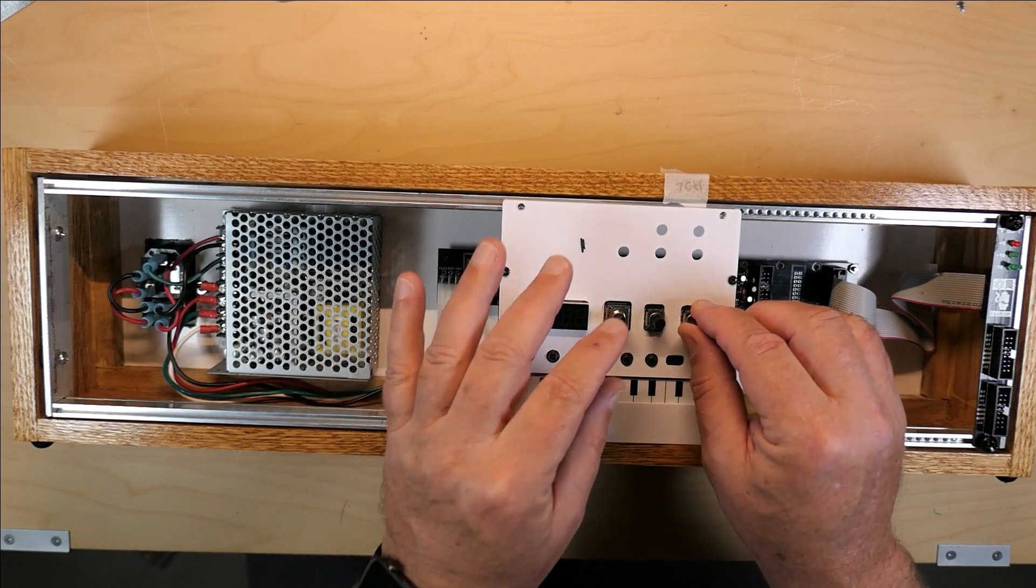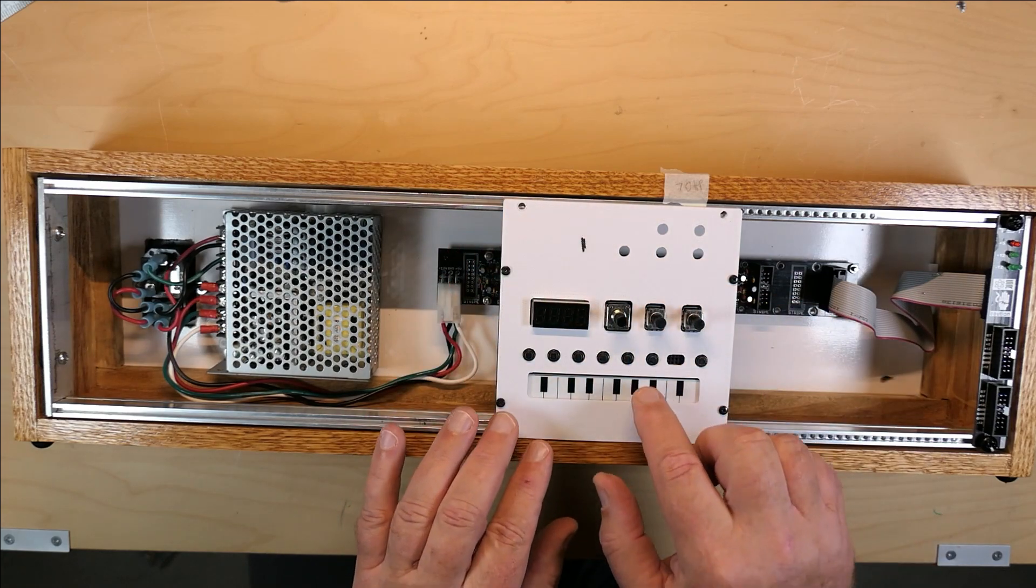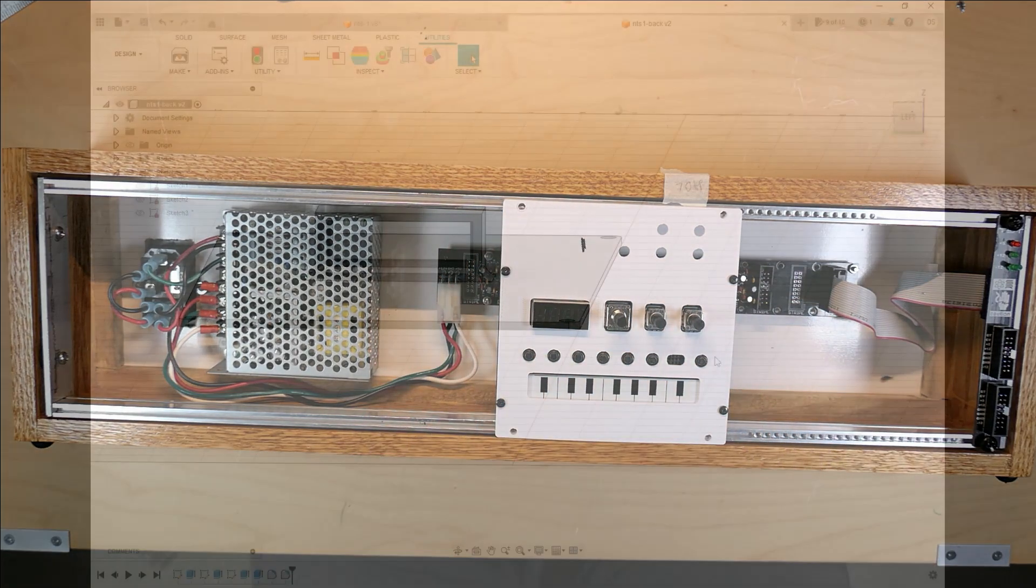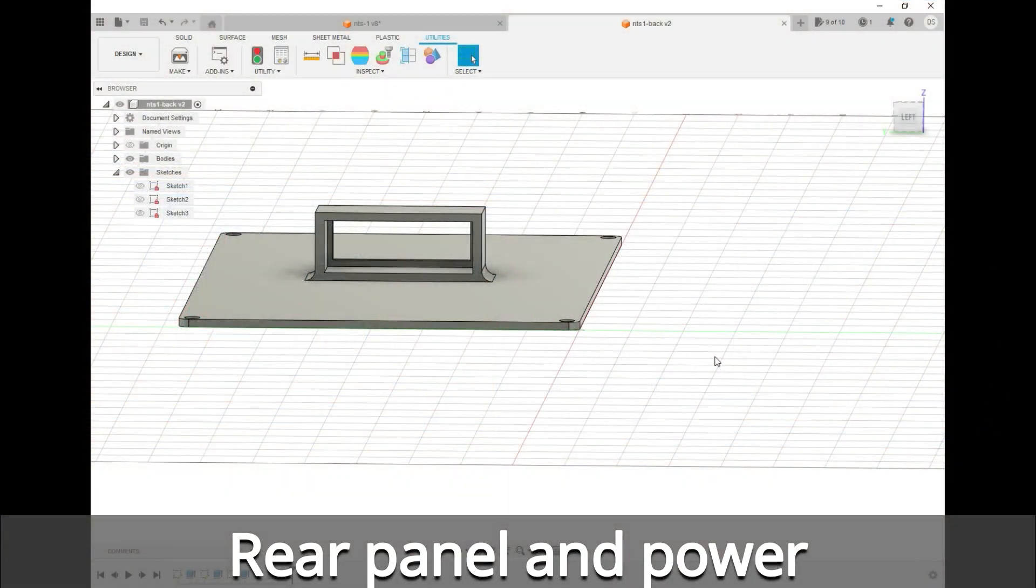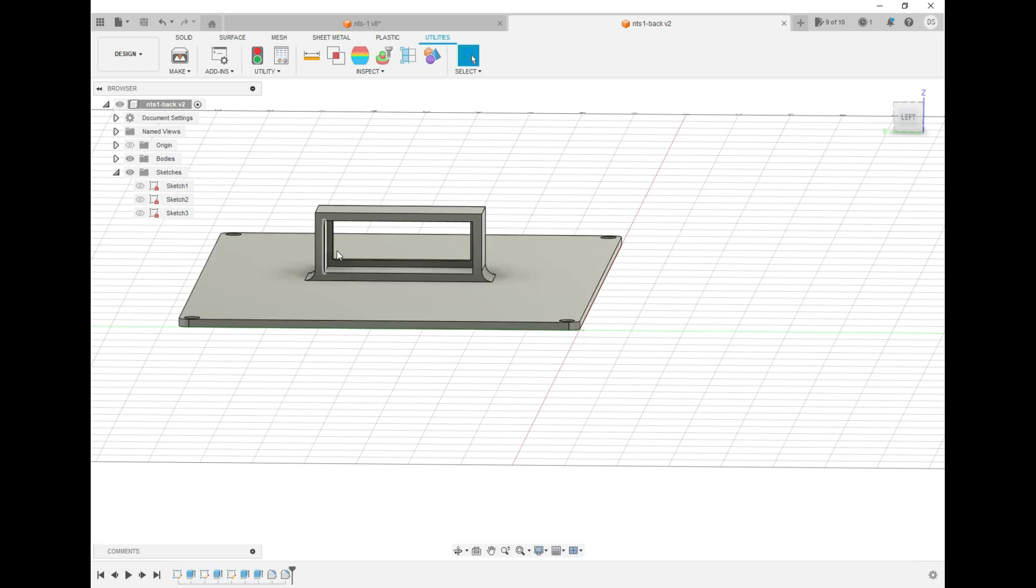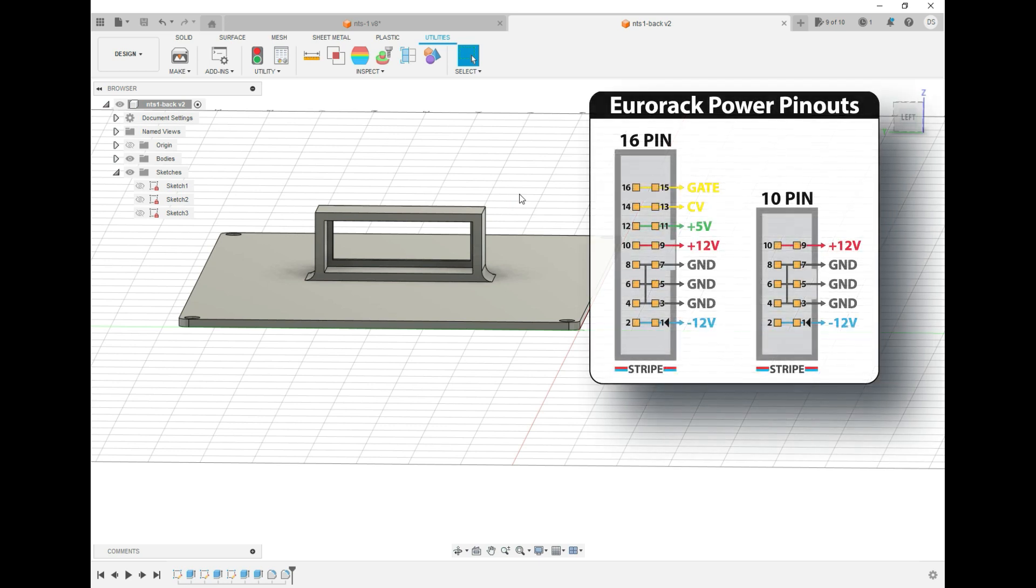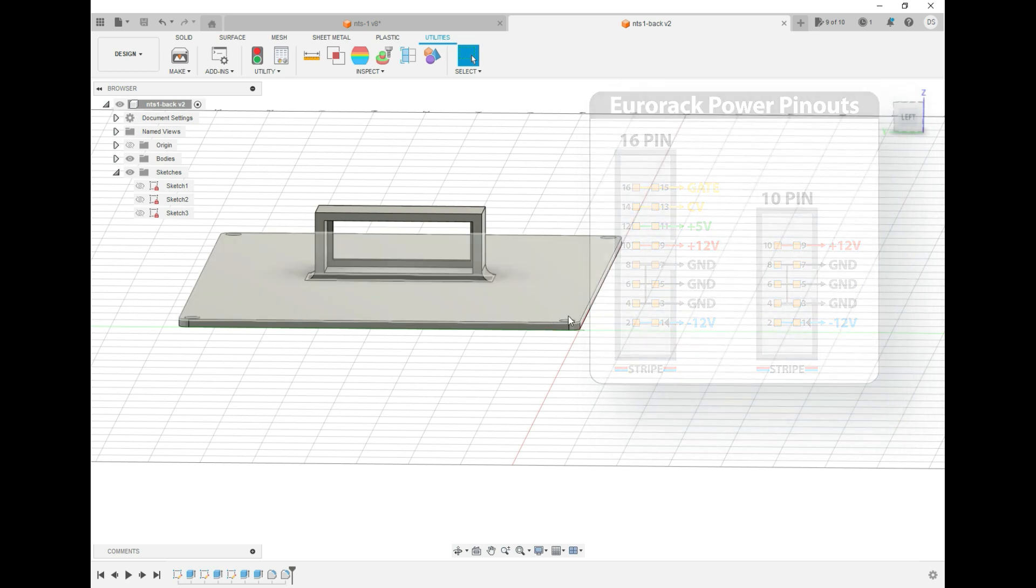So that looks hopeful. It fits into my Eurorack case fairly well. Looks like I can screw it into the front panel okay. The other thing I wanted to do was run power from the Eurorack case up to the module using the 16-pin Eurorack power plugs that are in the case, and then run that through to the USB.